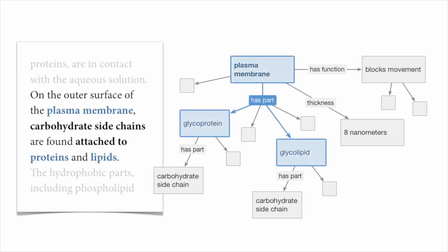Here's part of the plasma membrane graph. As a type of membrane, it inherits all the parts of membranes, including these specific types of proteins and lipids. The carbohydrate side chains are connected to these glycoproteins and glycolipids using the has-part relationship from our ontology.